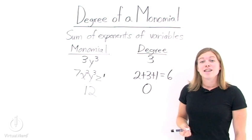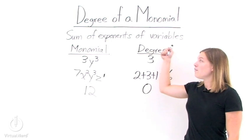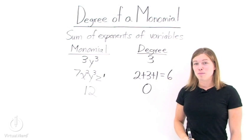So remember, to find the degree of a monomial, just find all of the variables and then add their exponents together.